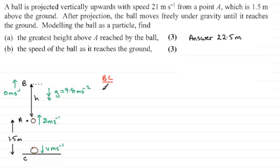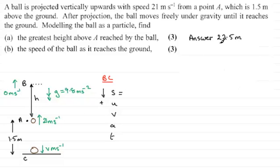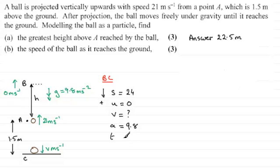We build up a SUVAT-based equation: S, U, V, A, and T. Because we're starting at the top going downwards, I'm going to select the positive sense to be downwards. So S, the displacement, is going to be H — which is 22.5 plus 1.5 — giving us 24. U, the initial velocity, was instantaneous rest at this point, so that's 0. V we're trying to find. A, the acceleration due to gravity, is 9.8 in the positive sense. And T — we're not after T.